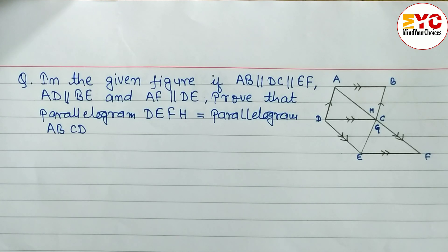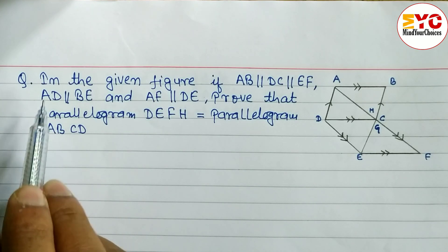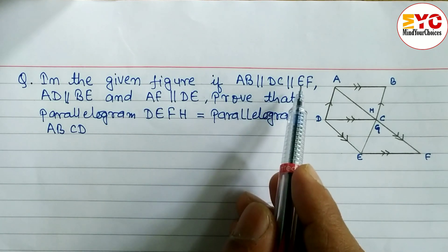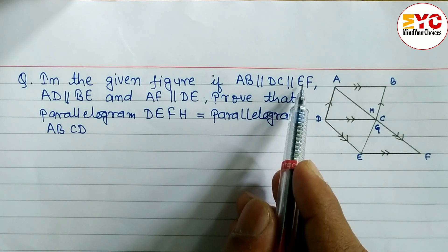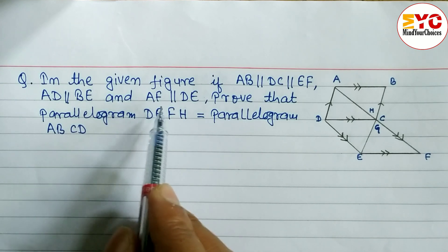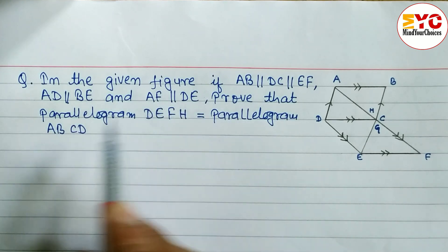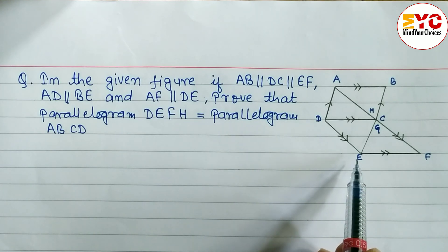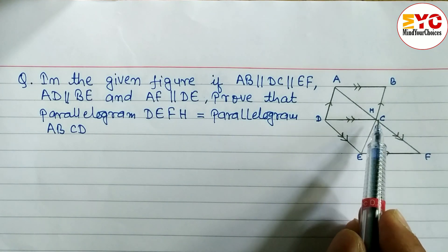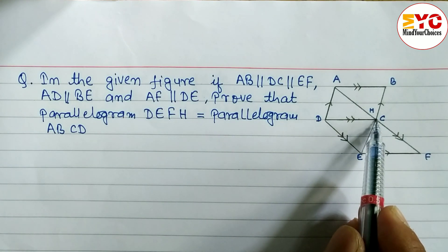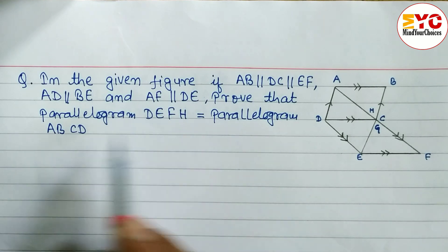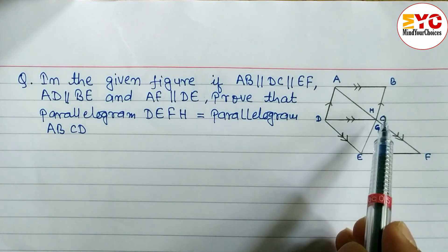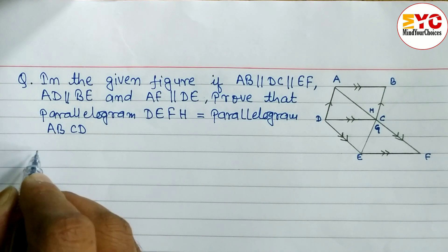This question is taken from class 10. In the given figure, if AB is parallel to DC which is parallel to EF, AD is parallel to BC, and AF is parallel to DE, we have to prove that parallelogram DEFH equals parallelogram ABCD — where H, C, and G are the same point. Let's get started.